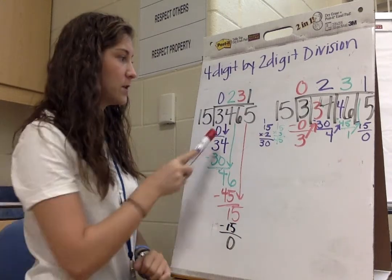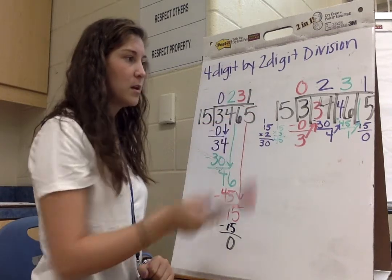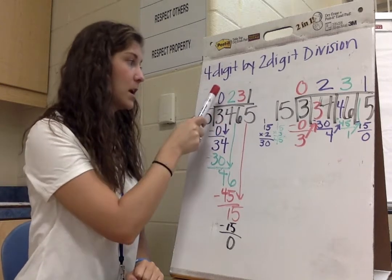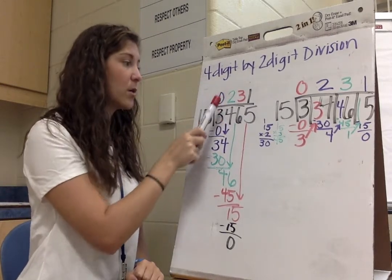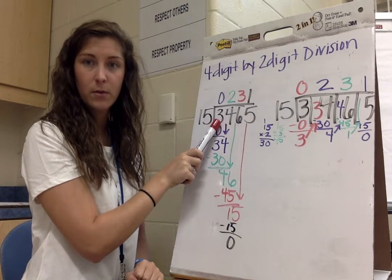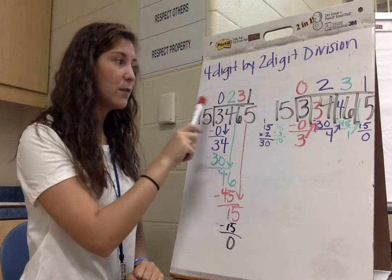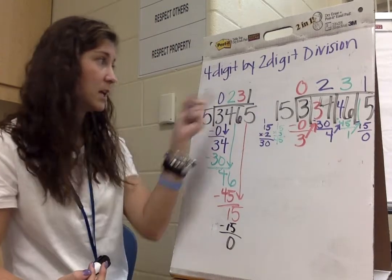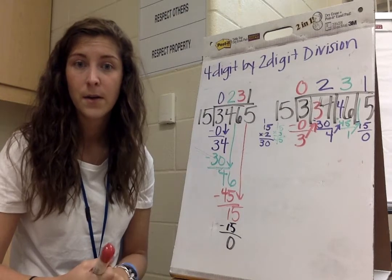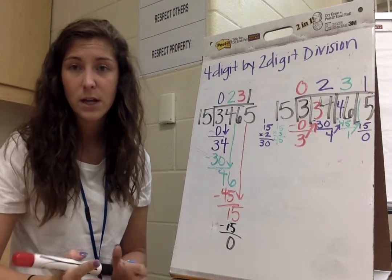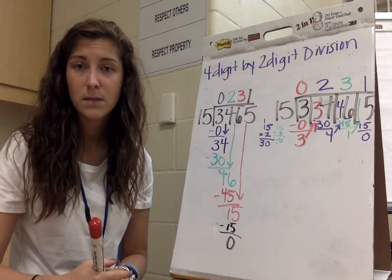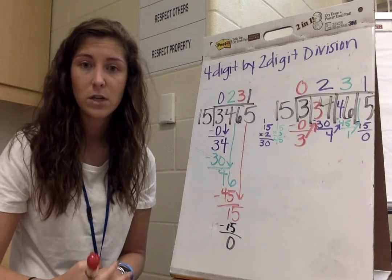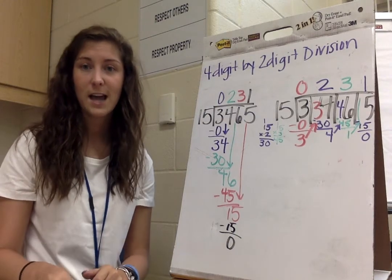Another very important part of division is making sure that you're keeping everything lined up. So whenever I'm asking myself these different questions, how many times can 15 go into 3, if I say 0, I'm putting 0 right above the number that I'm asking about. If you get confused or you get lost in where your numbers are, you could end up with the number in the thousands as the answer, when the answer is really only in the hundreds. So hopefully by now you've kind of decided which way that you like better to divide. You can use either of these methods. I encourage you to try the other one that you're not comfortable with, just to see if you can do it. But remember, if you have any questions, don't be afraid to ask.